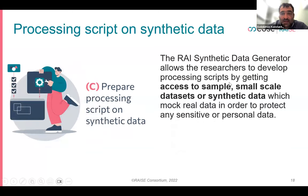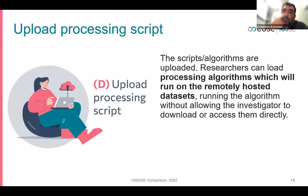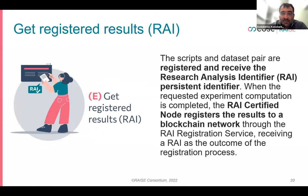Researchers can find and access datasets or existing results from previous processing algorithms that ran on the dataset. Once they find a dataset, they can download a sample — a small-scale dataset or synthetic data from the source — in order to prepare the algorithm and make sure they can process it following the dataset's format. Once ready, they upload the script or algorithm to the RAIS node where the data is, and the script is executed. The results of the execution are registered to a blockchain network, along with the dataset owner, any metadata, the results, and if possible, the algorithm or script itself.